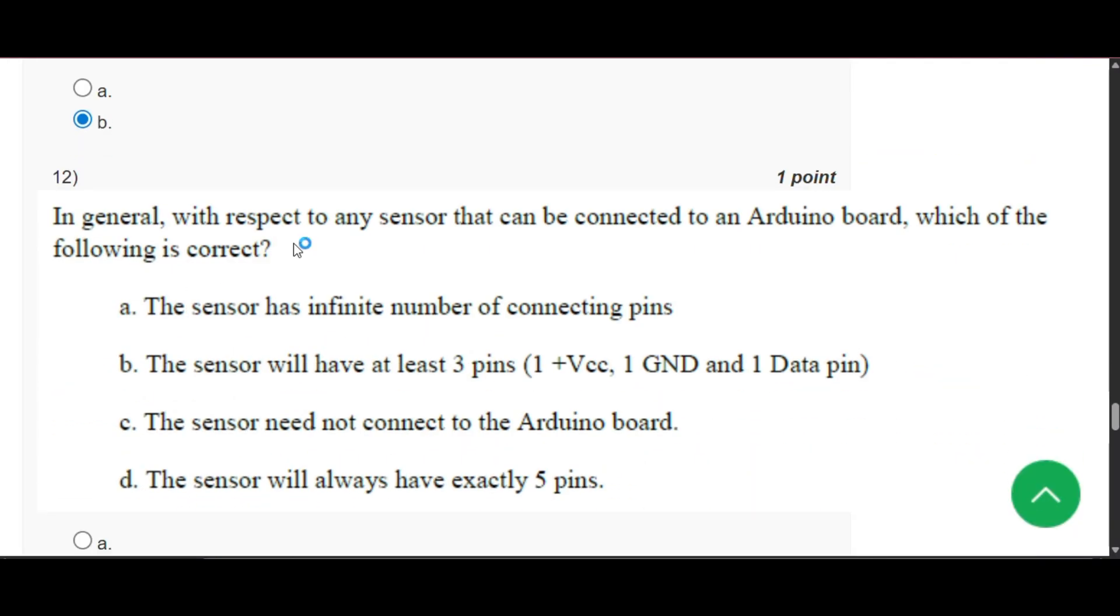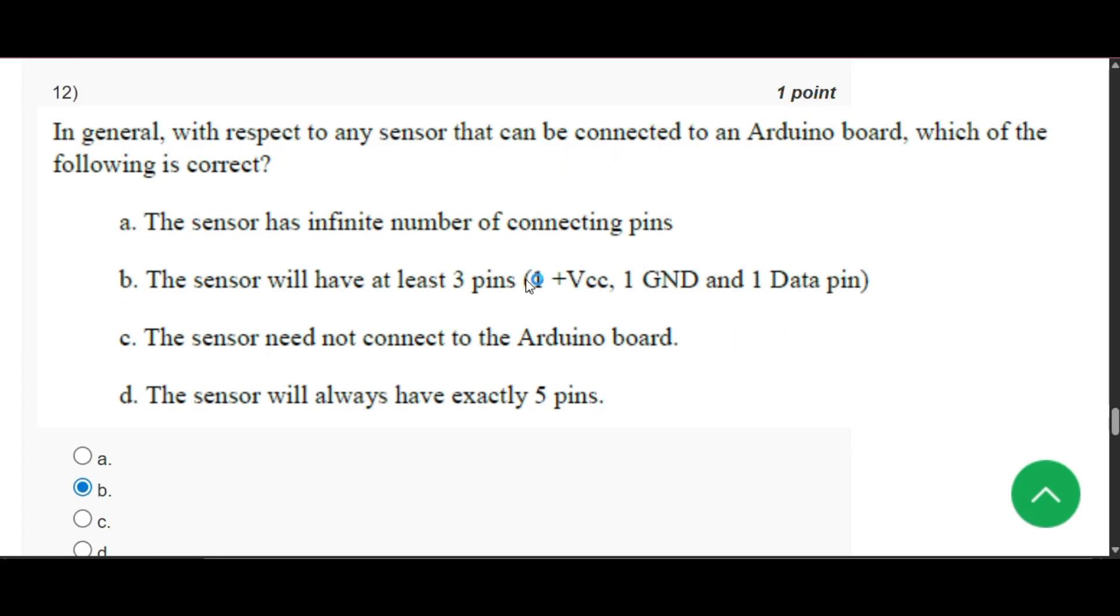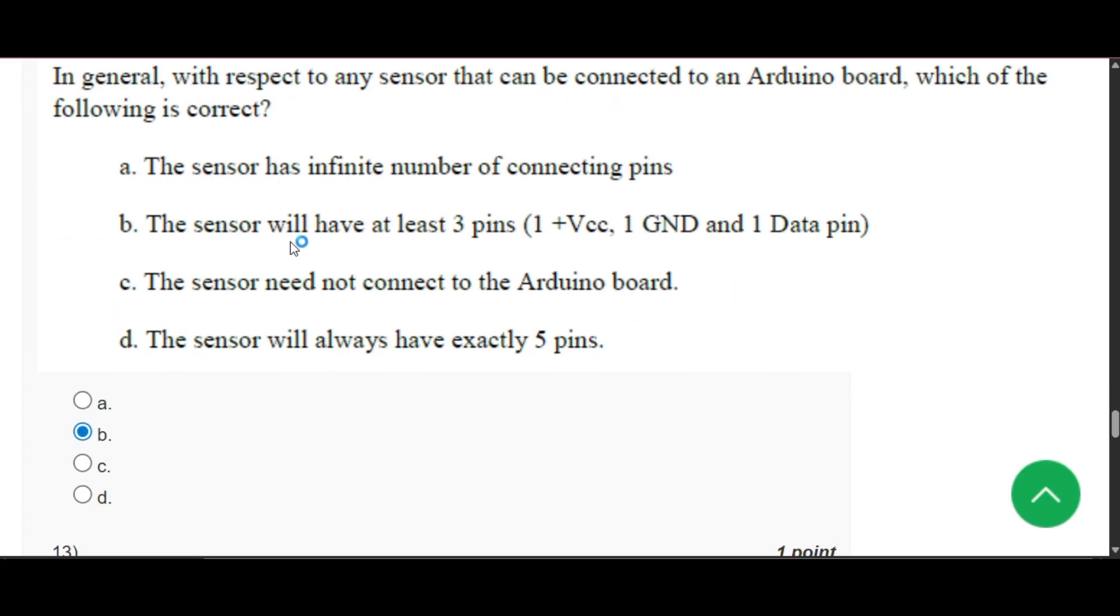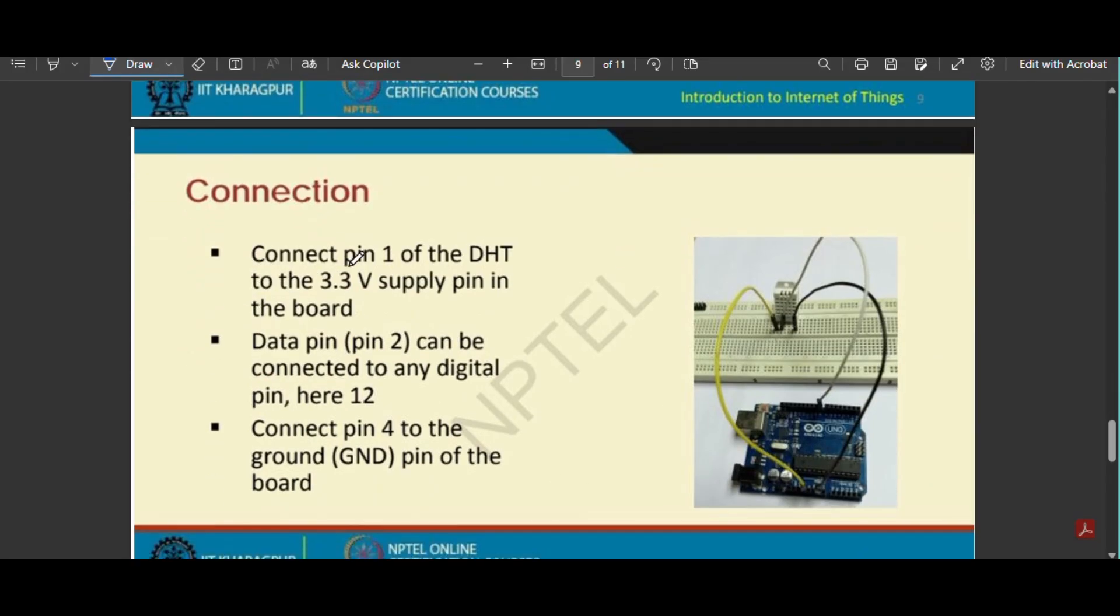Now question number 12: In general with respect to any sensor that can be connected to an Arduino board, which of the following is correct? So the answer will be option B, that is the sensor will have at least three pins: VCC, ground, and data pin. Here you can see that this is VCC pin which is connected to 3.3 volt. It is data pin and another pin is ground pin.